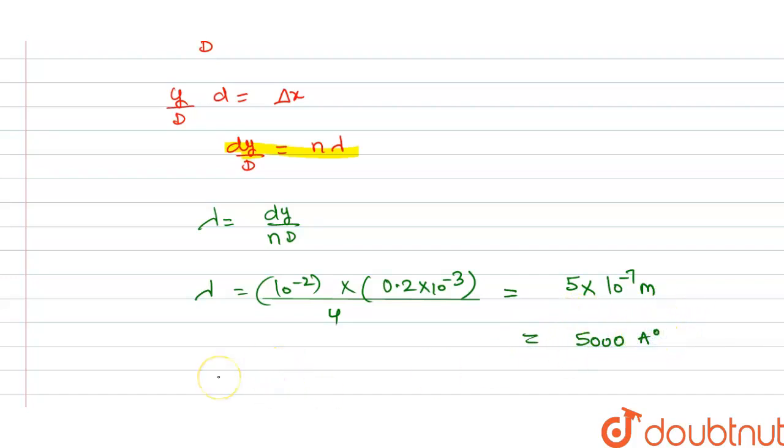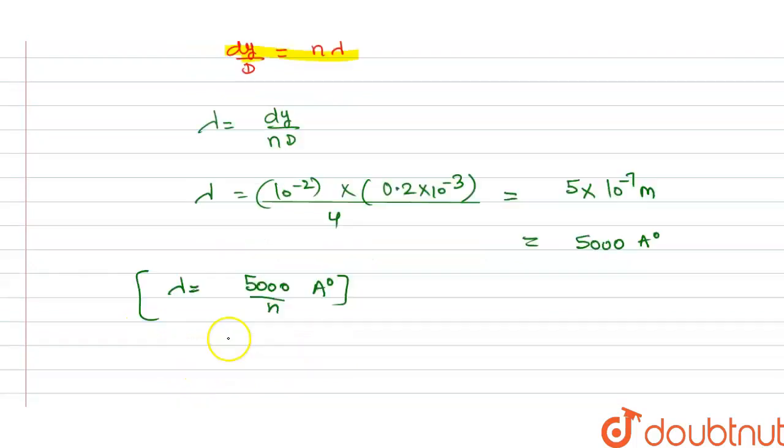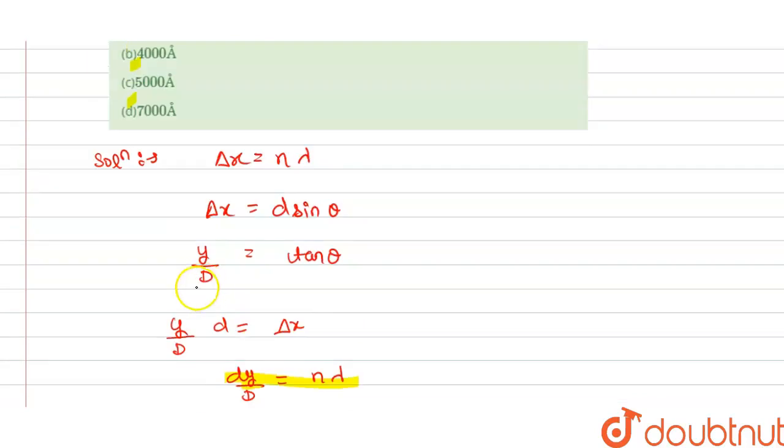We know that maxima is at 5000 angstrom, so from this we get n = 1, so λ is 5000 angstrom. This is our required answer. Now we check which option is correct - our option C is correct. Thank you.